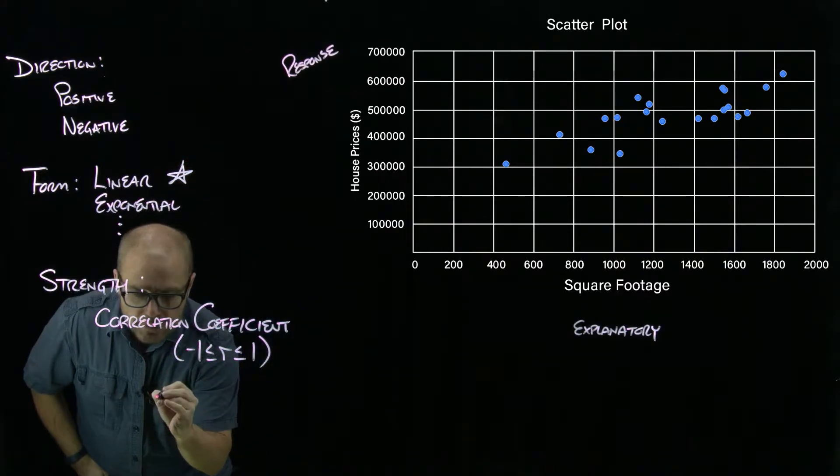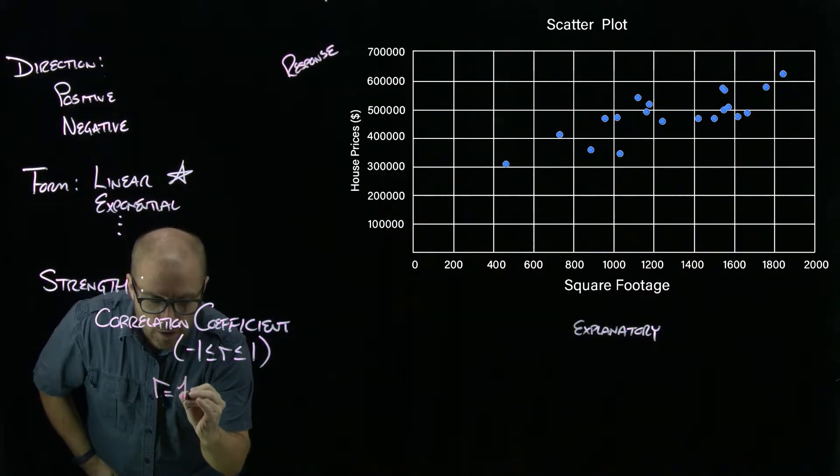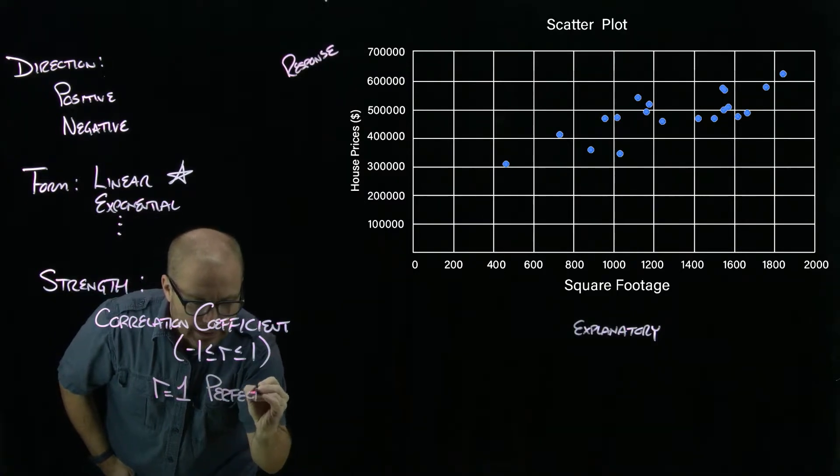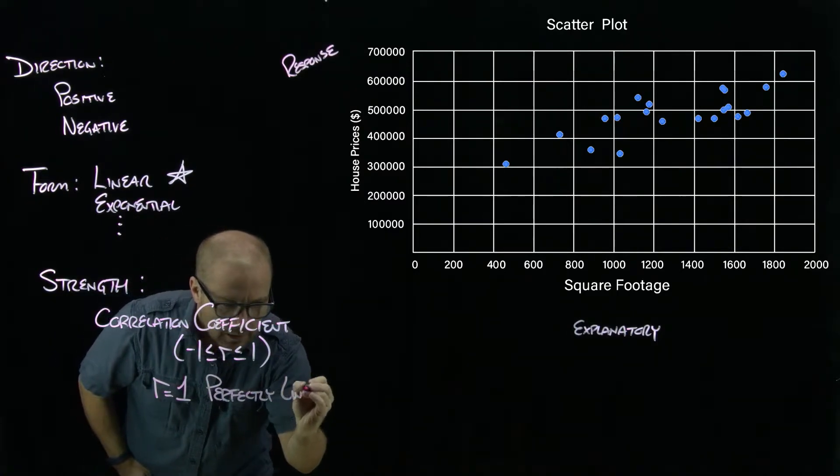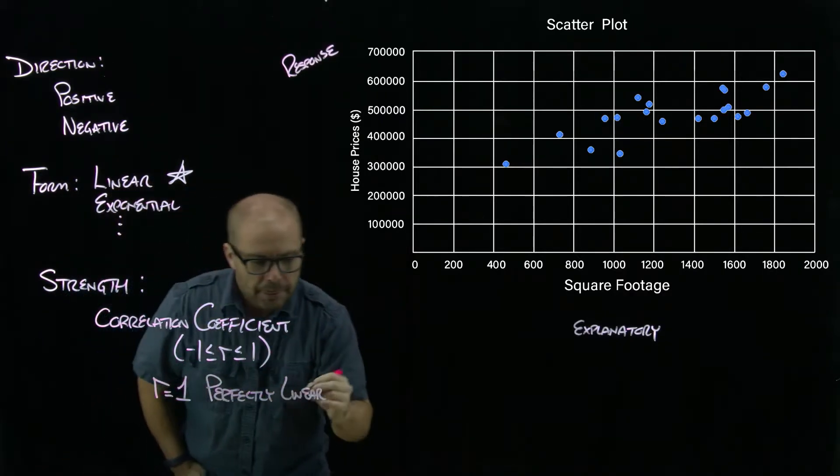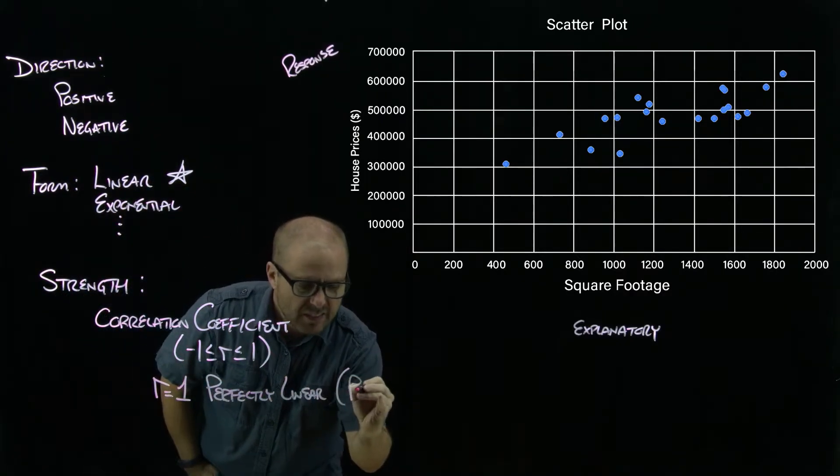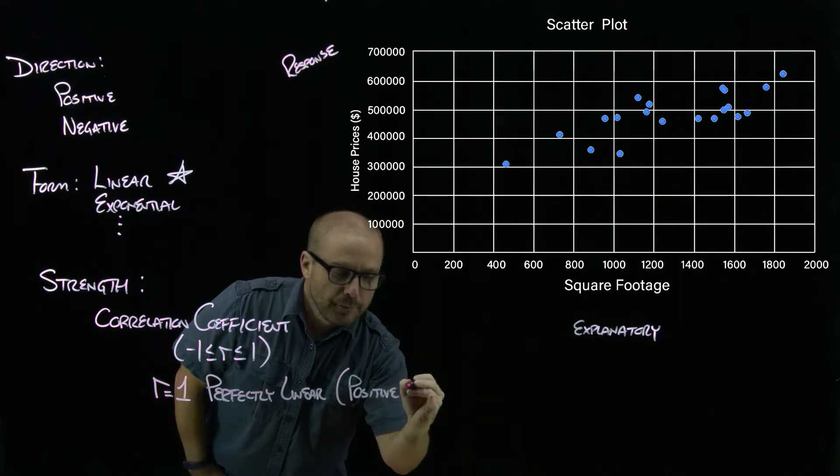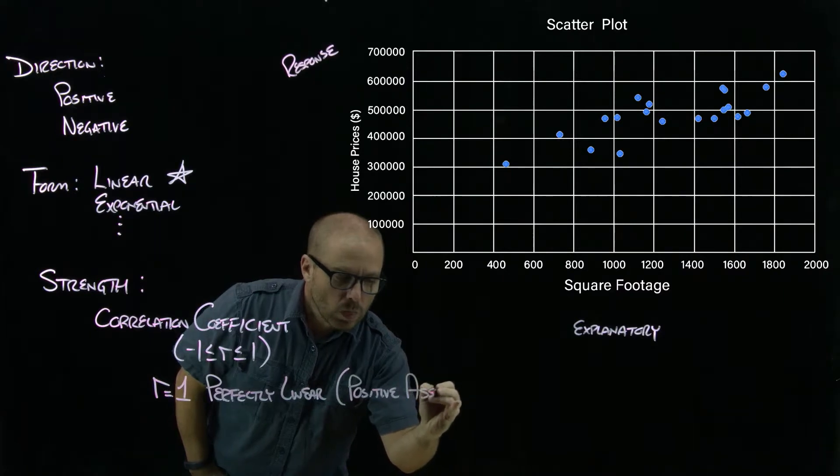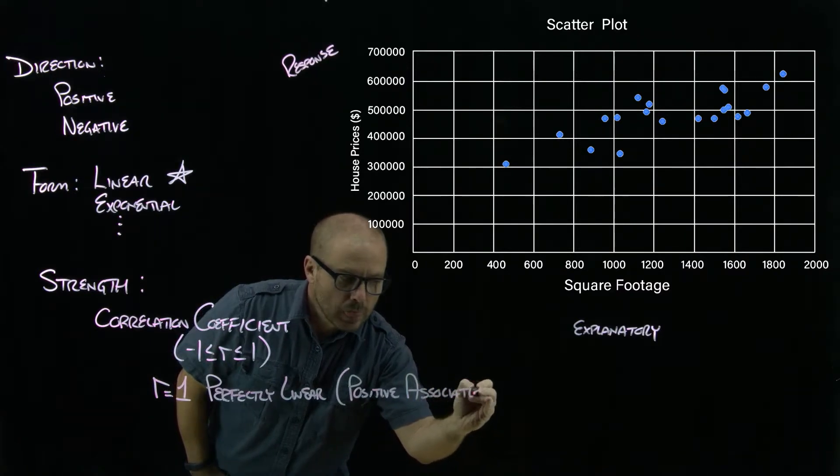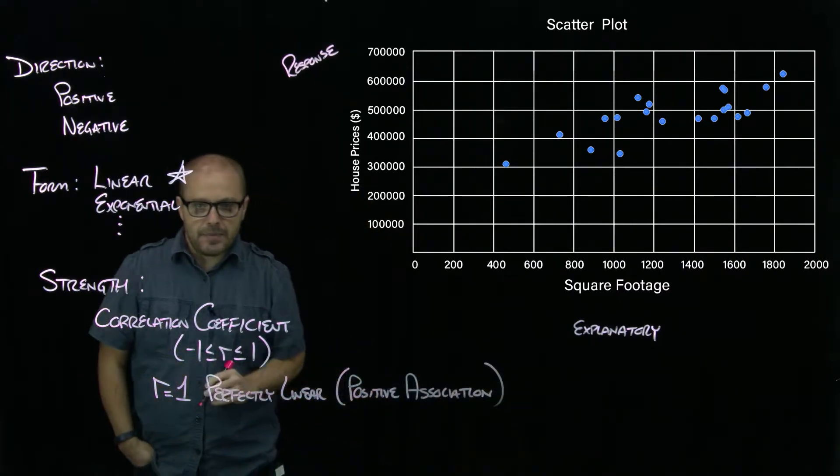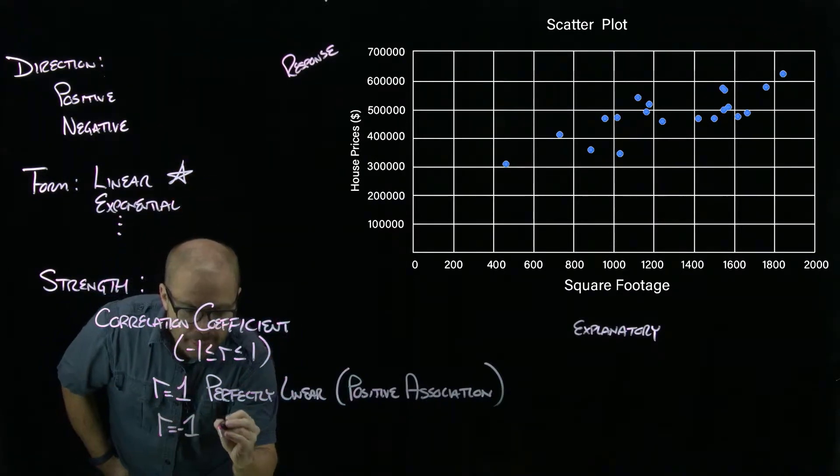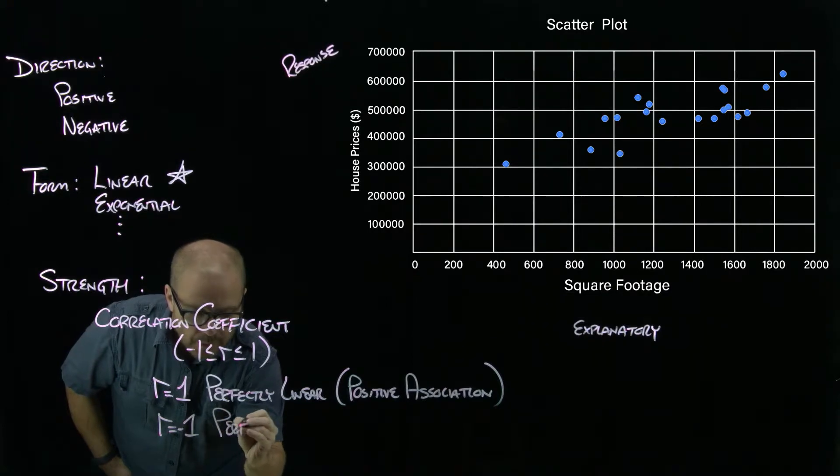So R equals one is going to be perfectly linear, and the association is positive. And then an R of negative one is perfectly linear with a negative association.